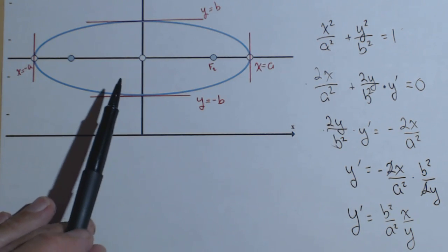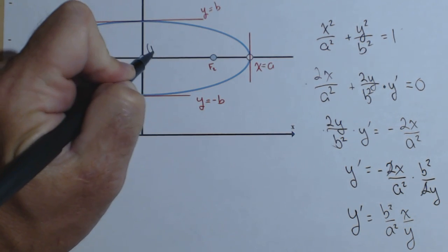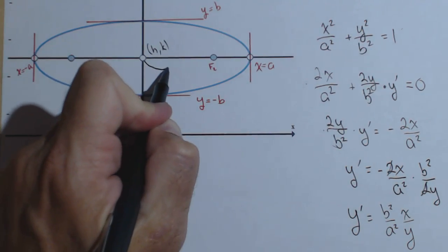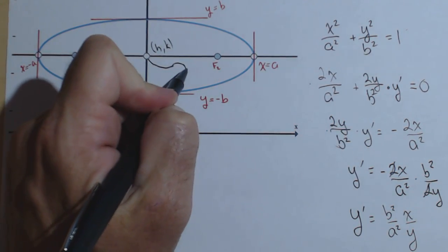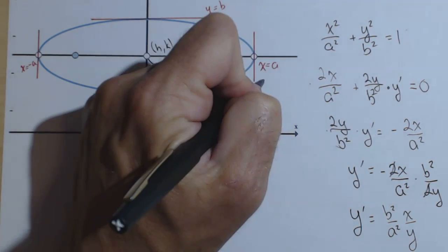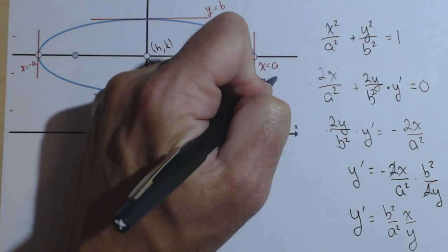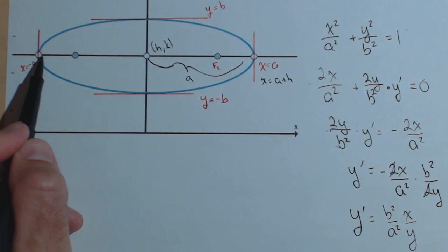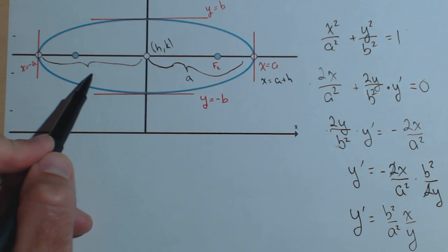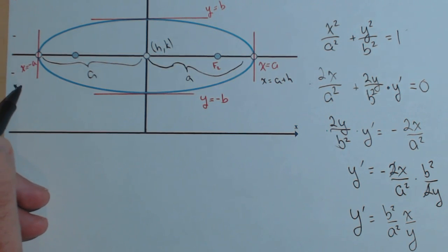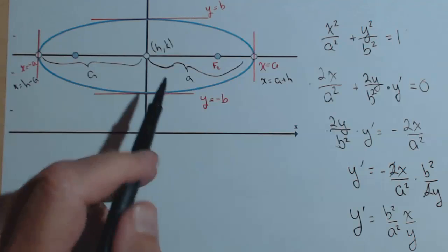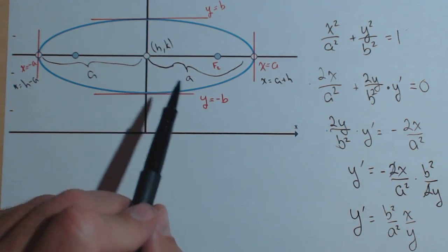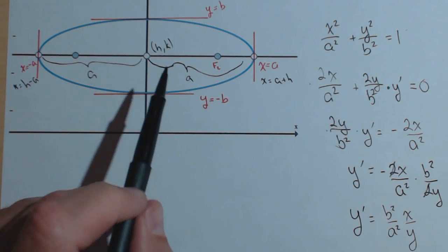Now we can move this if this happens to be centered at (h,k). Remember, the distance from the center out to the vertex is a. So this would be x equals a plus h. This would be x equals h minus a. Same thing here, k plus b, k minus b. So we can adjust regardless of where the center is.